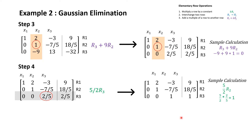Now, is this matrix in row echelon form? A matrix is in row echelon form if it satisfies two conditions: first, rows containing only zeros are at the bottom — there are no such rows here, so this condition is not applicable. Second, the first non-zero element of any row is the leading entry and is to the right of the leading entry in the previous row. The leading entries in rows 1, 2, and 3 each satisfy this condition. Therefore this matrix is in row echelon form.